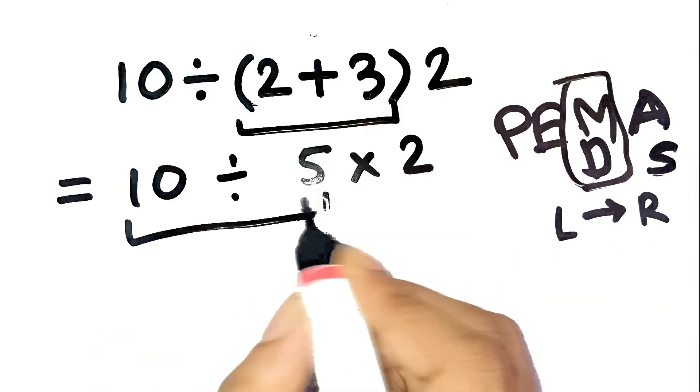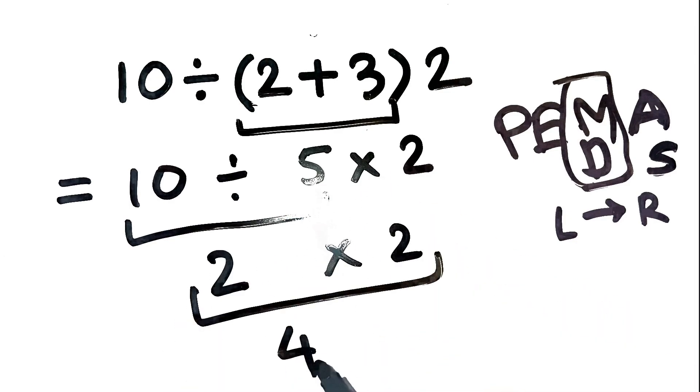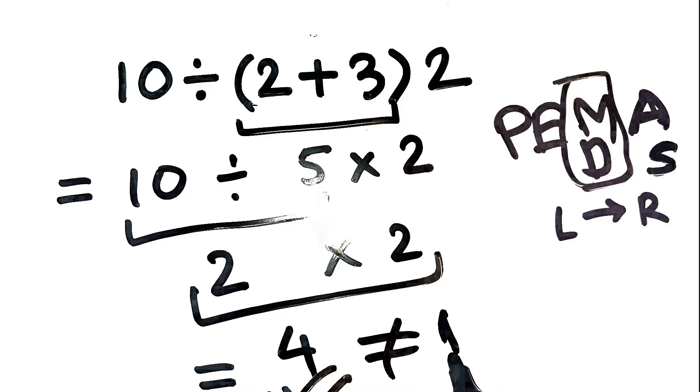First, 10 divided by 5 is 2. Then, 2 times 2 is 4. So the correct answer is 4, not 1.